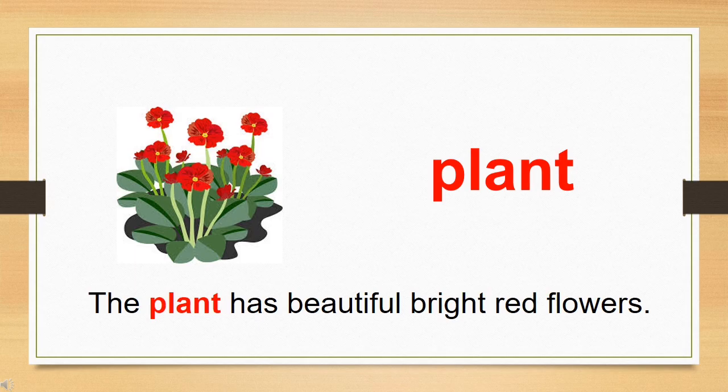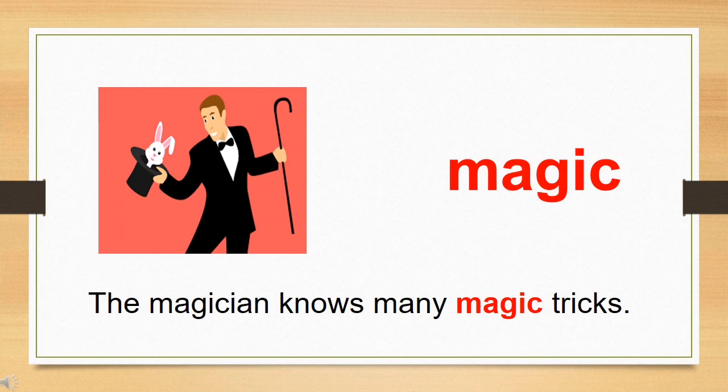Now let's move to the next word. The word is plant. Let's use plant in the sentence: The plant has beautiful bright red flowers. You can see in the picture. Now let's move on to the next slide.